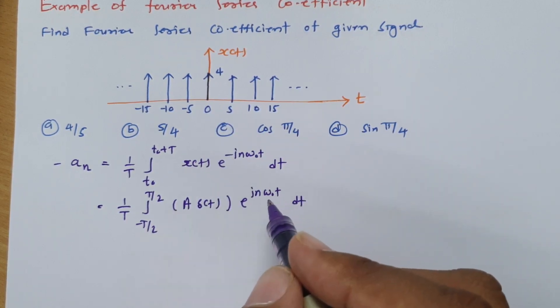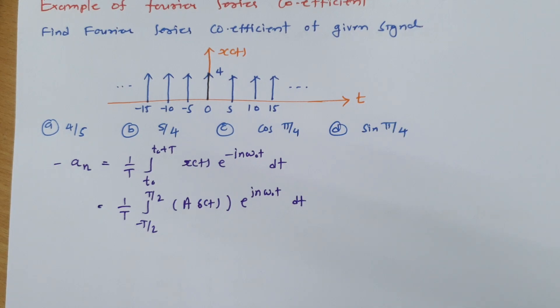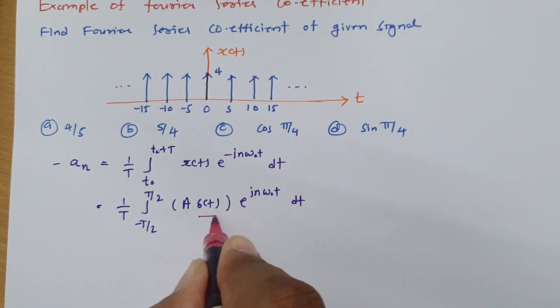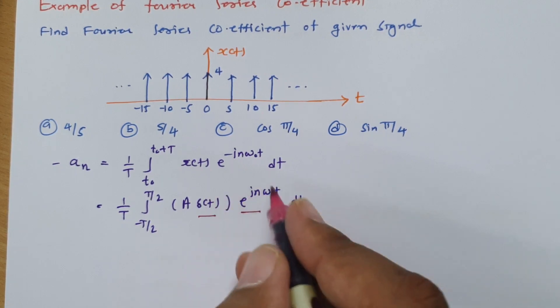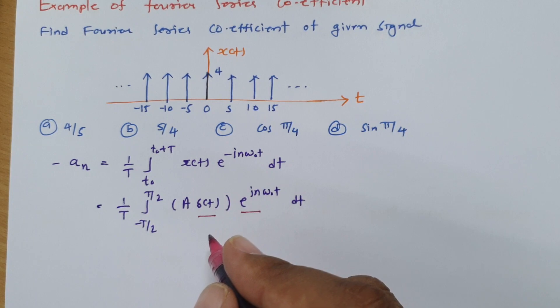Here we do integration and in that integration we have impulse function. So all we need to do is place t equals 0 in that term and one can have the final value.